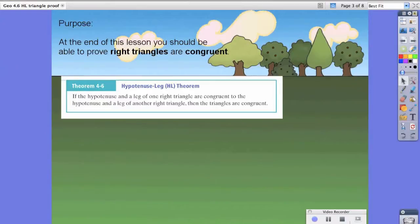To help us, we're going to use theorem 4-6, which is the hypotenuse leg theorem or HL theorem. It states: if the hypotenuse and a leg of one right triangle are congruent to the hypotenuse and a leg of another right triangle, then the triangles are congruent.